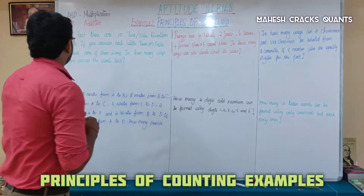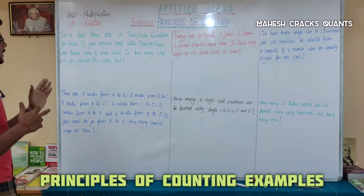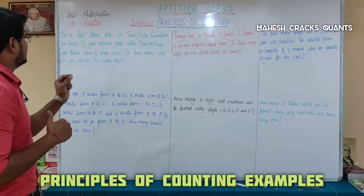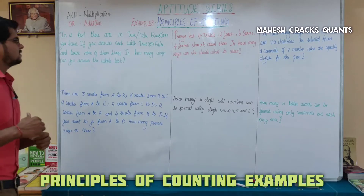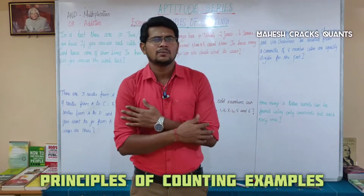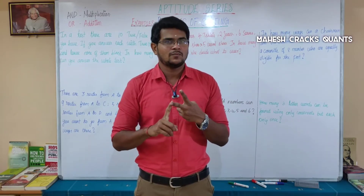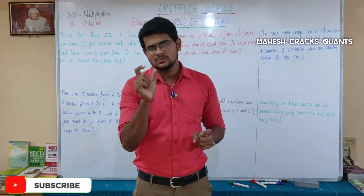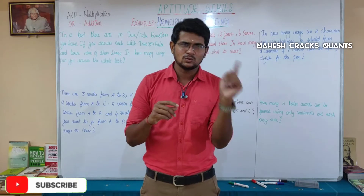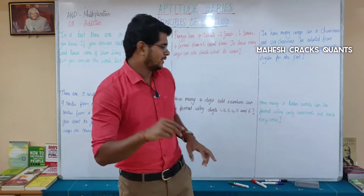First question. In a test, there are 10 true or false questions. If you answer each with true or false and leave none of them blank, in how many ways can you answer the whole test? There are 10 questions in the test and there are two choices: true or false. For one question, there are two ways to answer.